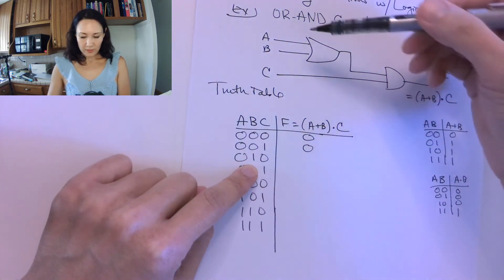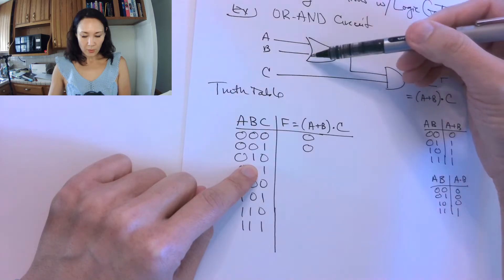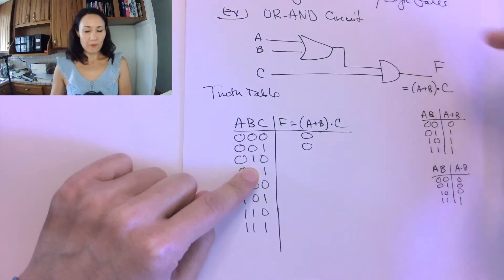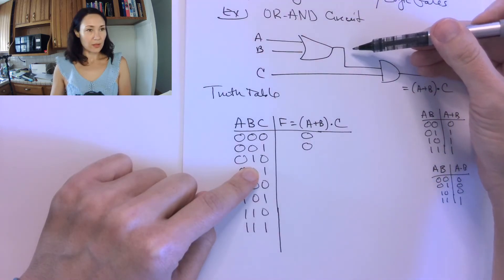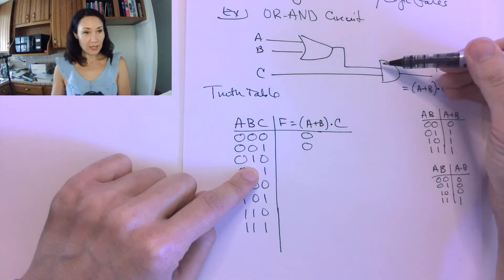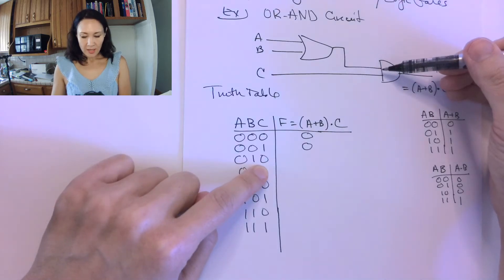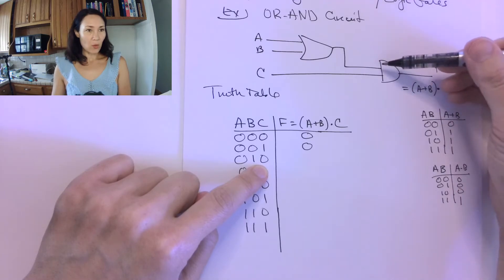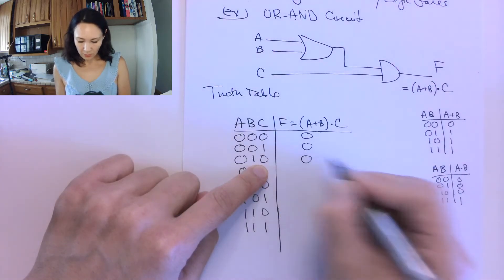Next case, we have a 0 or a 1, a 0 and a 1 coming in on A and B. So now we're going to have the output of our OR is finally going to be a 1. So we have a 1 coming into this AND gate. Our C input is now a 0. So we have 1, 0 going into our AND gate. 1 and 0 is going to be 0 still.